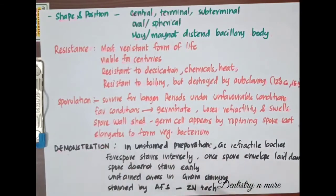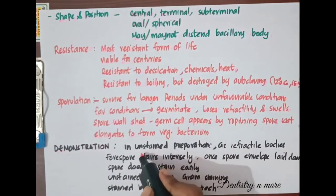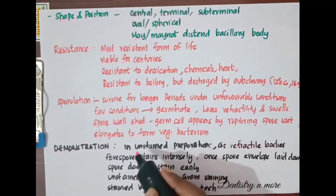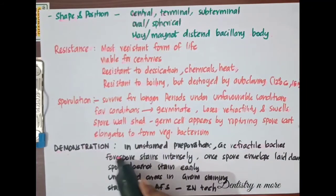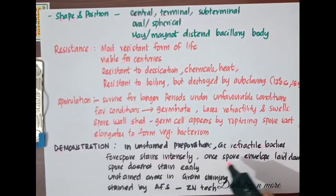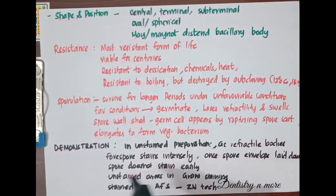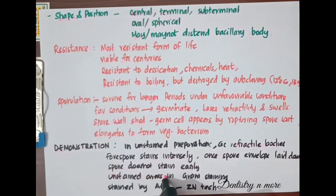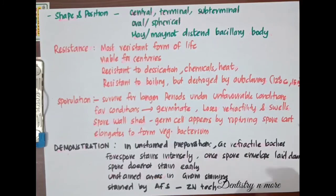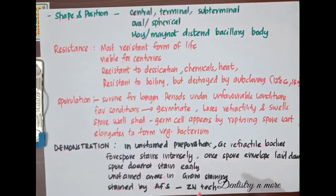To demonstrate bacterial spores, spores may be seen as refractile bodies in unstained preparations. Forespores stain densely, but once the spore envelope is laid down, the spore does not stain easily. In Gram staining, bacterial spores appear as unstained areas. Bacterial spores are generally more acid-fast than vegetative cells, so they can be stained by a modification of the Ziehl-Neelsen technique. That's all about bacterial spores, thank you.